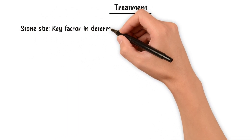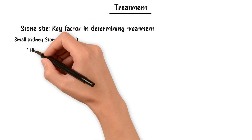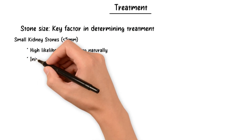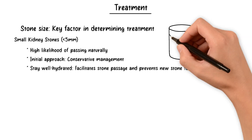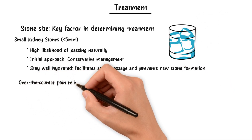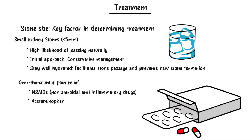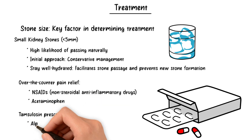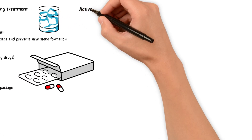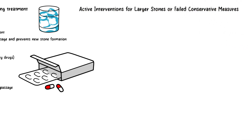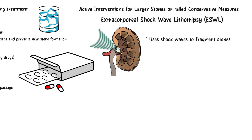The size of a kidney stone plays a crucial role in determining the most appropriate management strategy. Small kidney stones, usually less than 5 millimeters in size, have a good chance of passing on their own without medical intervention. Conservative management is typically the initial approach: staying well hydrated is essential to help flush out smaller stones and prevent new ones. Over-the-counter pain medications like NSAIDs or acetaminophen can provide relief. In some cases, your healthcare provider may prescribe tamsulosin — an alpha blocker that helps relax the muscles in your ureter, making it easier for stones to pass. When conservative measures aren't sufficient or for larger stones, active interventions may be necessary. Extracorporeal shockwave lithotripsy uses shockwaves to break up kidney stones into smaller fragments that can be passed through the urinary tract.